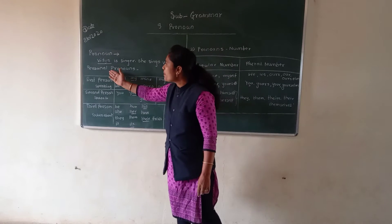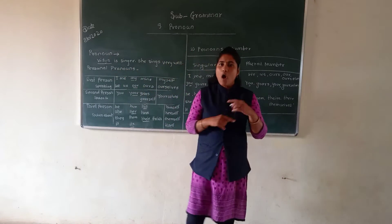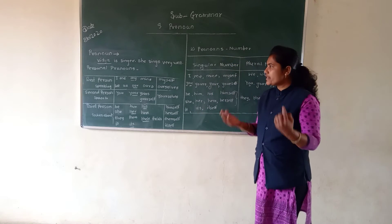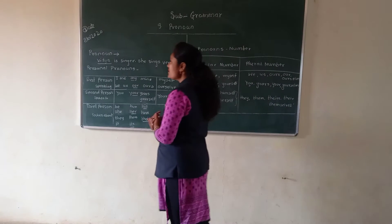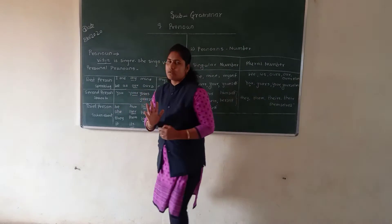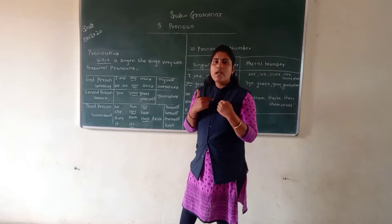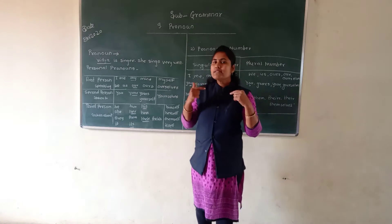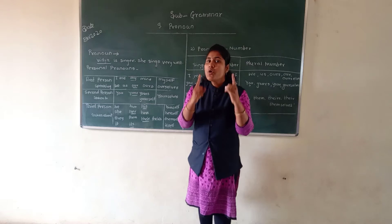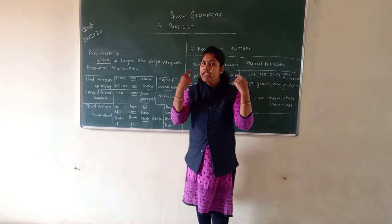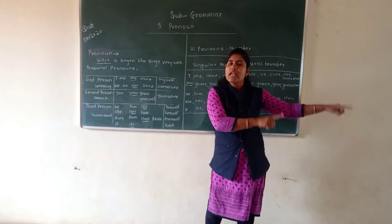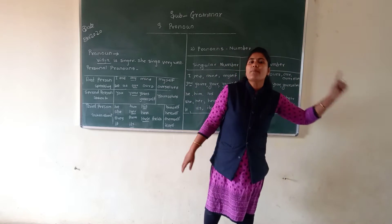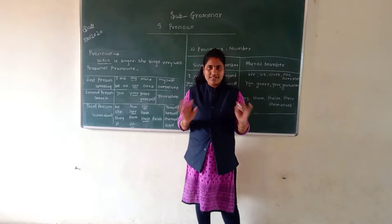Now student, we will see about the personal pronoun — how we use all pronouns in sentences in English. There is the first person, second person, and third person. First person means like me — I am speaking, so I am the first person. I am speaking with you, so you are the second person. And we are speaking about another person — for example, Atarma. We are speaking about Atarma, so Atarma is the third person. Concept clear.